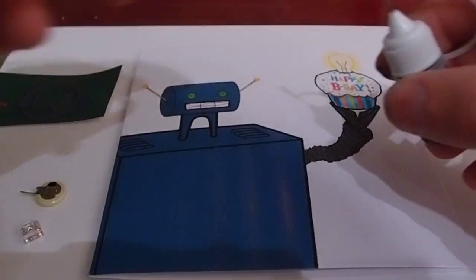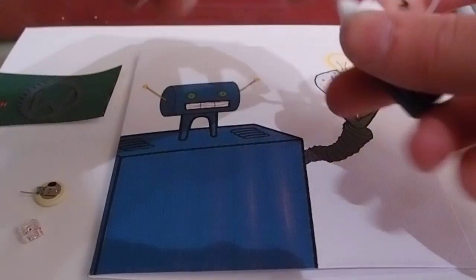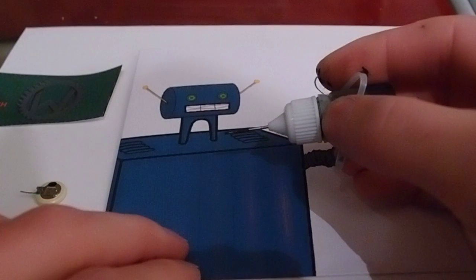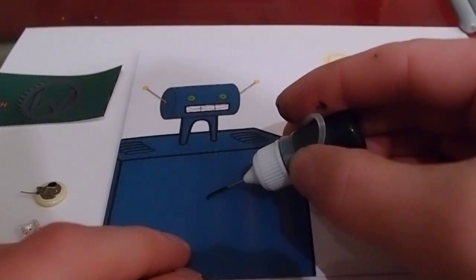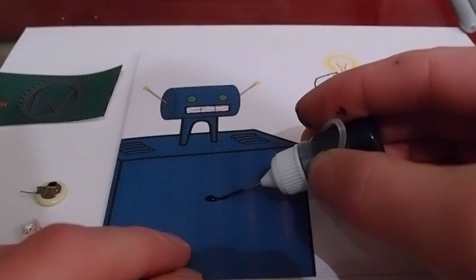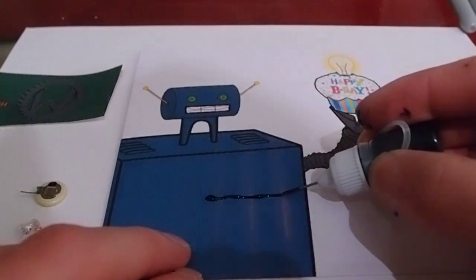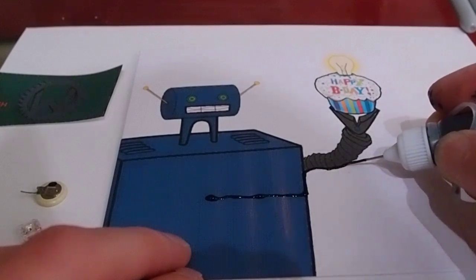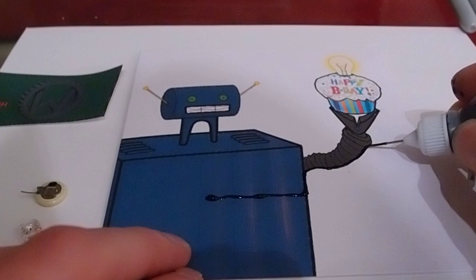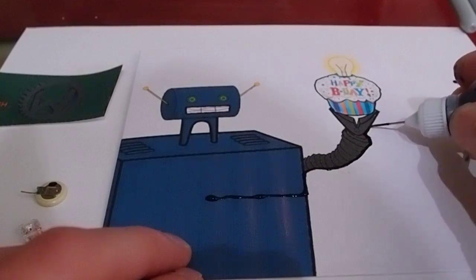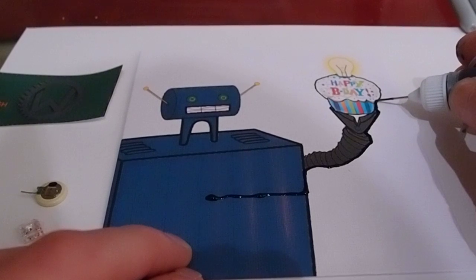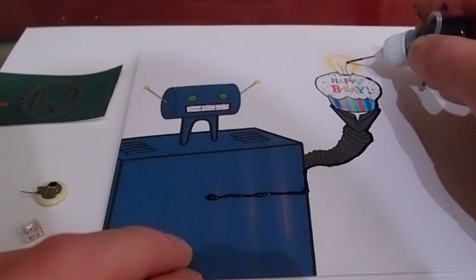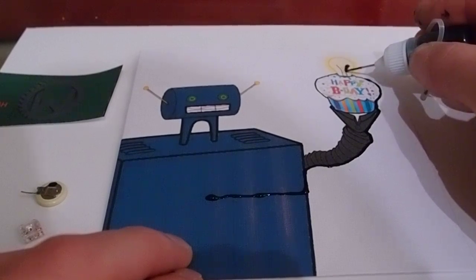So first thing we'll do, take our conductive ink, take the cap off, hold it out of the way while we're drawing so it doesn't get dragged through the ink. We'll start from where our battery is going to be placed, draw a nice line up the robot's arm, around his hand, all the way up to where the LED will be placed.